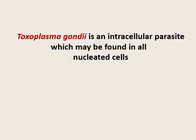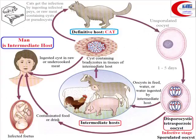Toxoplasmosis is caused by Toxoplasma gondii, which is an intracellular parasite and may be found in any nucleated cells. The diagnostic stages of toxoplasmosis — let's look at the life cycle so we can go into the details of it.